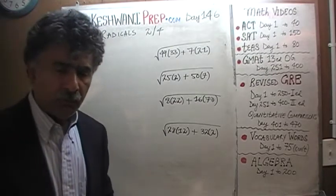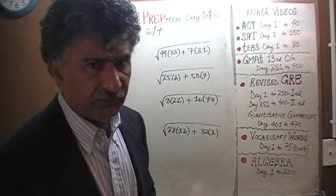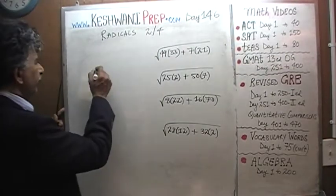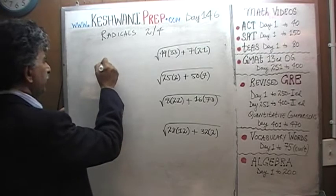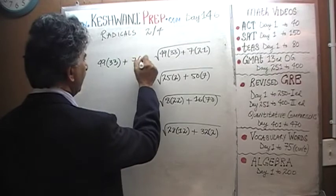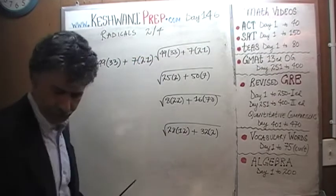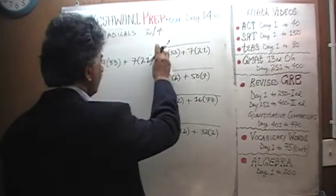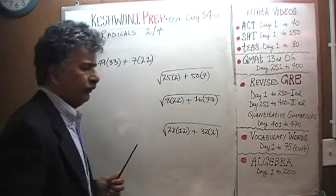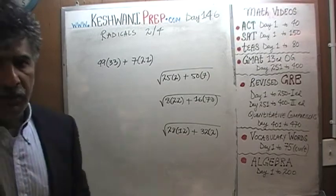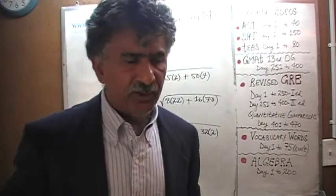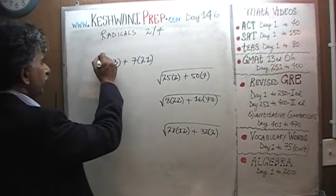Because I am going to work under the assumption that you do understand the basic concepts. So, let's get going. The very first problem we have is √(49×33) + √(7×21). Again, we look at the four quantities and we ask ourselves, is there any quantity here that we can either convert into a perfect square or is already a perfect square? The answer is yes, 49 is already a perfect square.